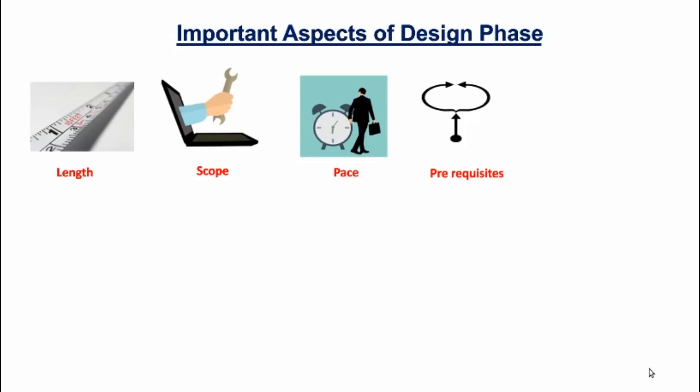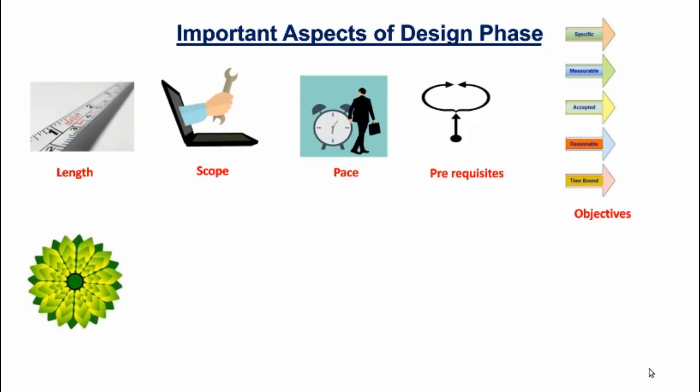And after determining all these aspects, we will have to translate the content rules into measurable learning objectives. That is, we have to make it assured that the design roadmap is specific, measurable, accepted, reasonable, and time bound. Then comes the content structure and sequence.